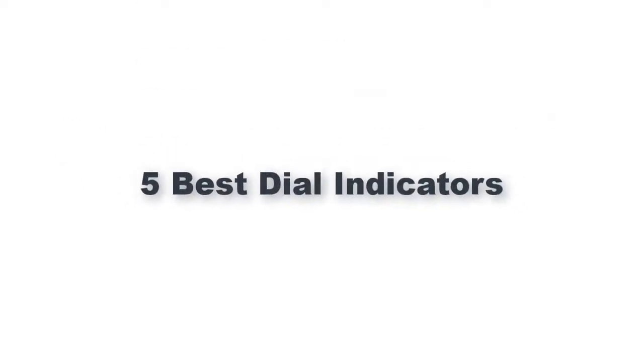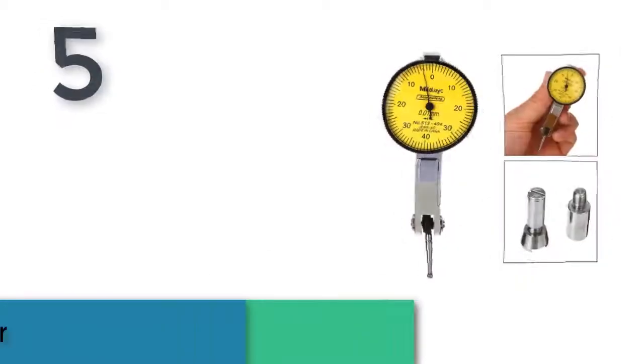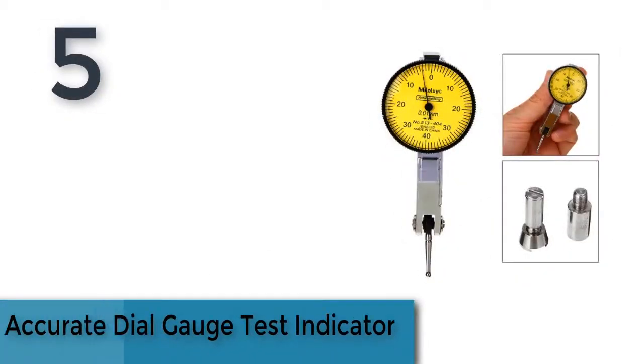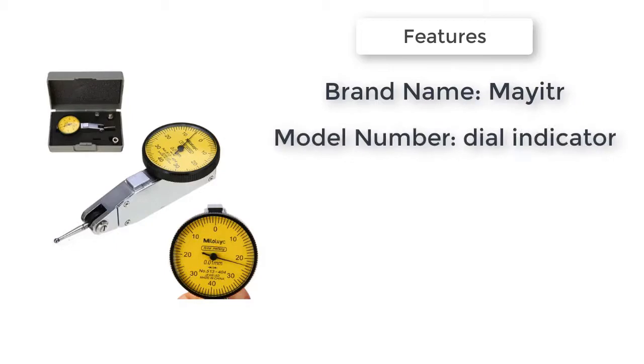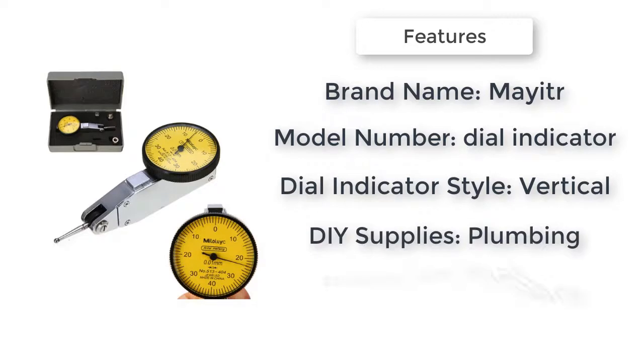Five best dial indicators. The item number five is accurate dial gauge test indicator. Accurate and convenient measurement of narrow or concave objects that a dial gauge is difficult to measure, the size of internal and external diameter using non-clutch structure.